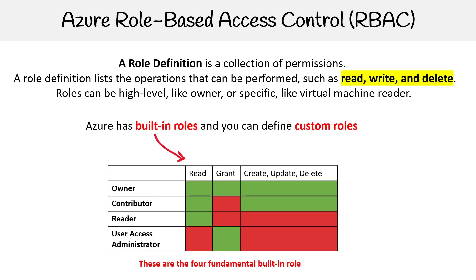Azure has built-in roles, and there are four fundamental ones: owner, contributor, reader, and user access administrator. Across the board you have three operations: read, grant, and create/update/delete. The owner can do everything. The contributor can both read and create, but cannot grant access to other people. The reader has read-only access. The user access administrator can grant other users privileges but cannot create anything themselves.